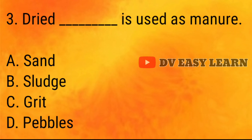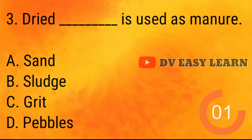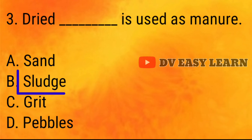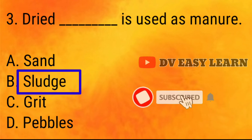Q3: Dried dash is used as manure. Correct answer: Sludge.